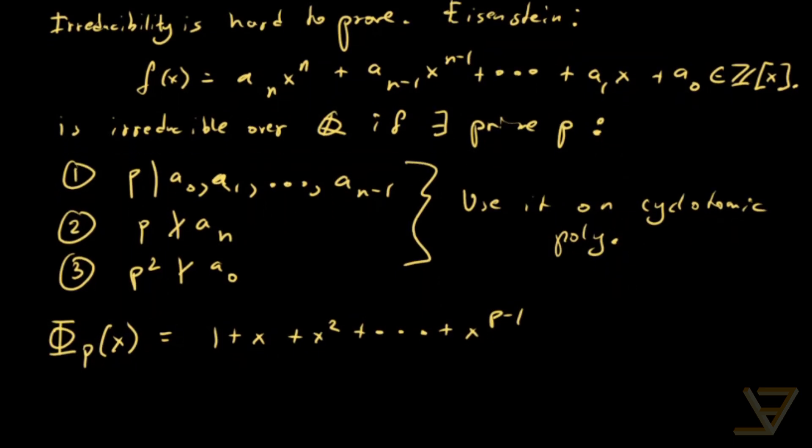So it's clear that we can't apply Eisenstein immediately, not directly, because these coefficients are all just one. That's not going to help in terms of finding a prime. No prime divides one.